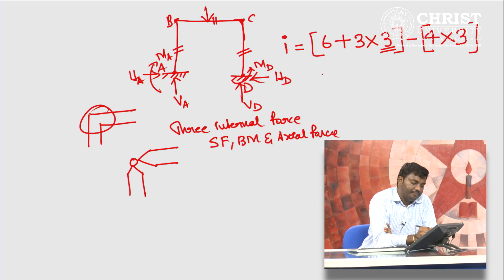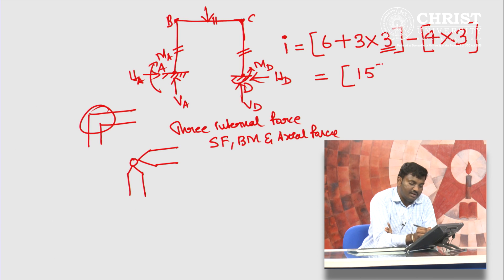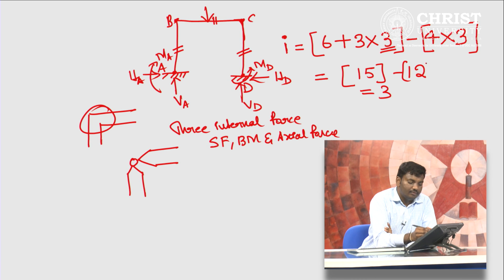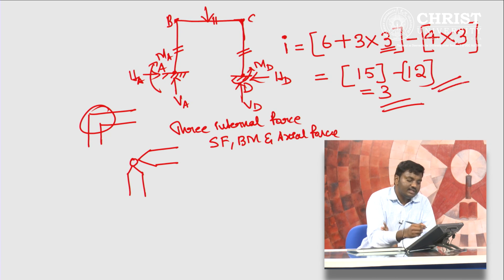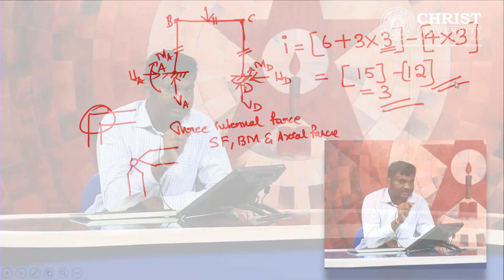Let us see what is the static indeterminacy of this portal frame. 6 + 9 = 15, minus 12 equals 3. The degree of indeterminacy of this portal frame is 3. This is a very important conclusion.